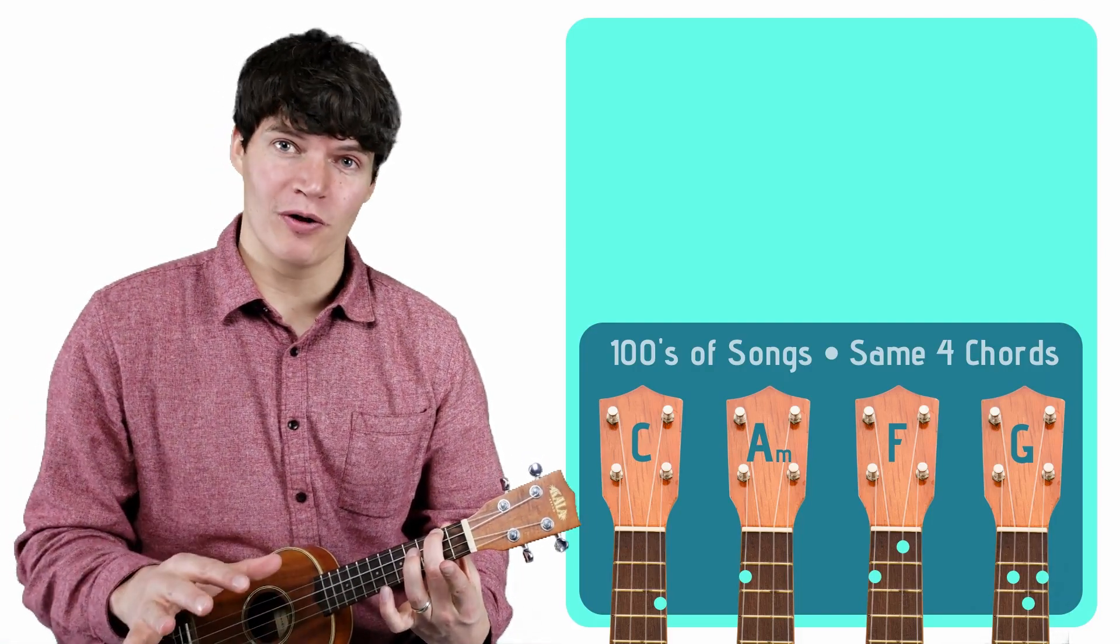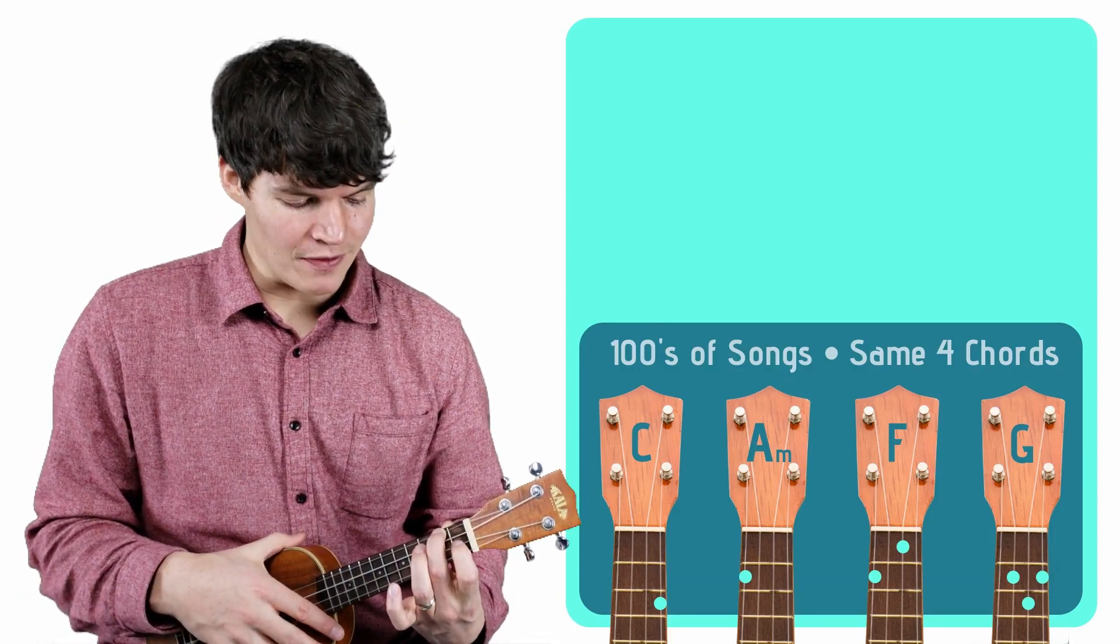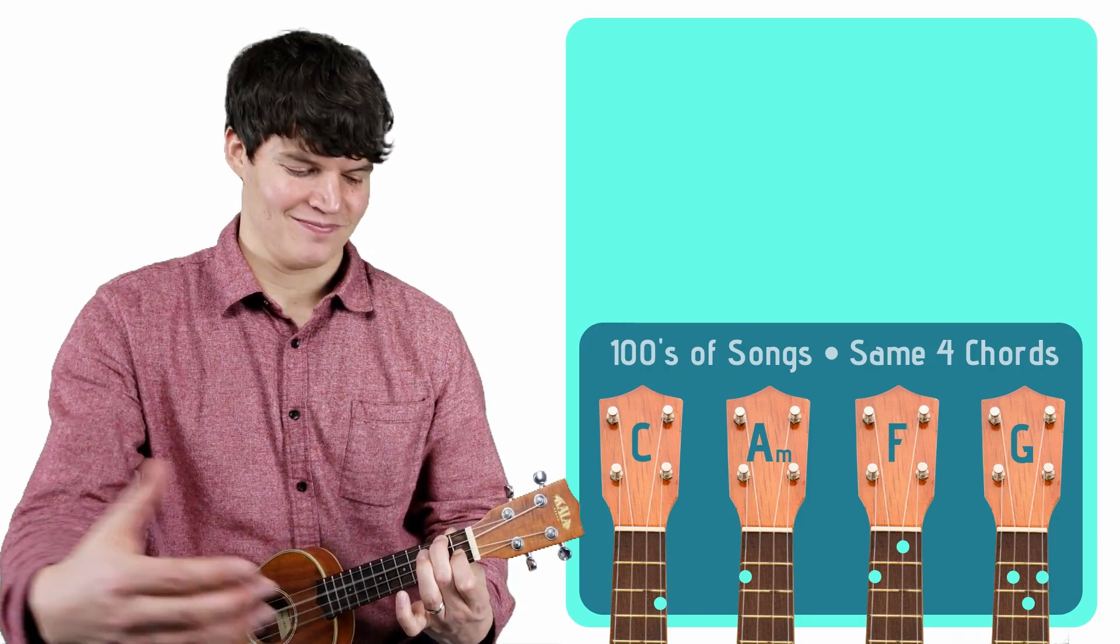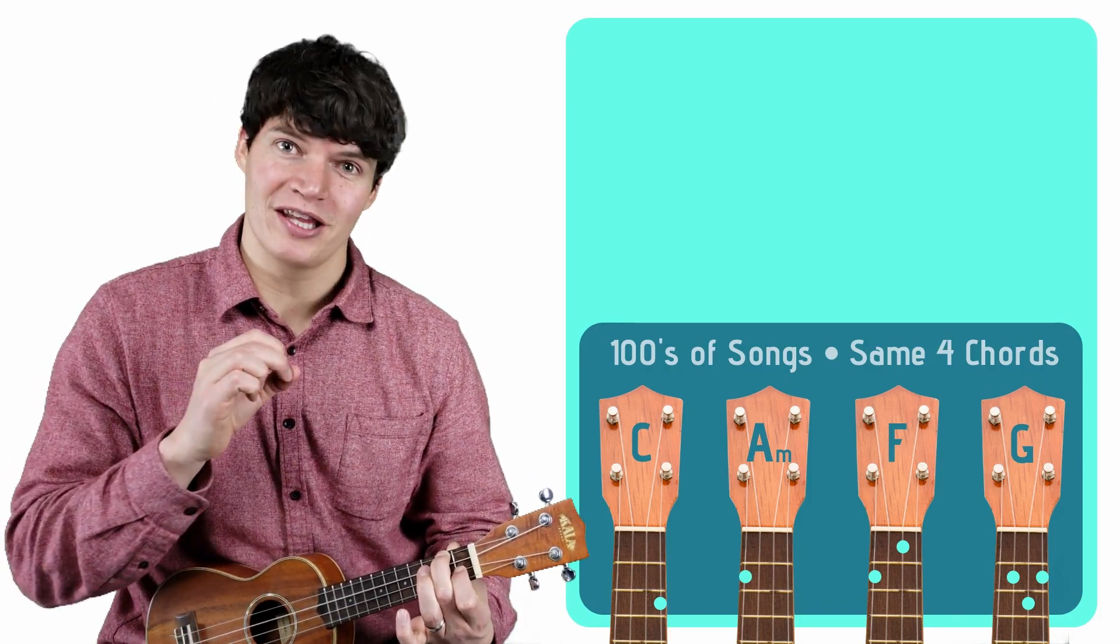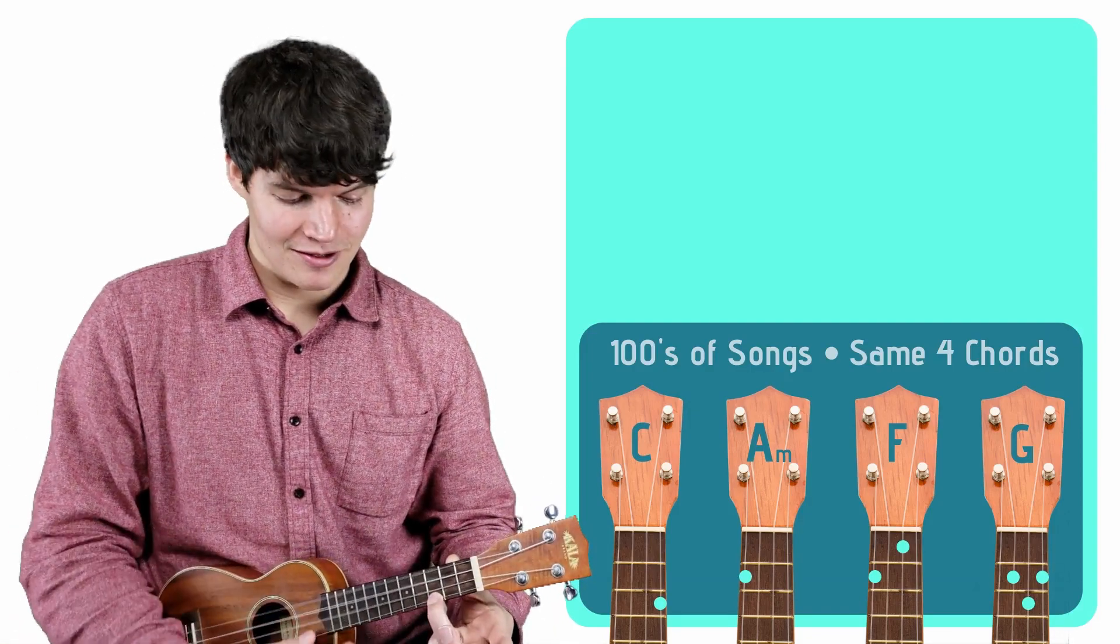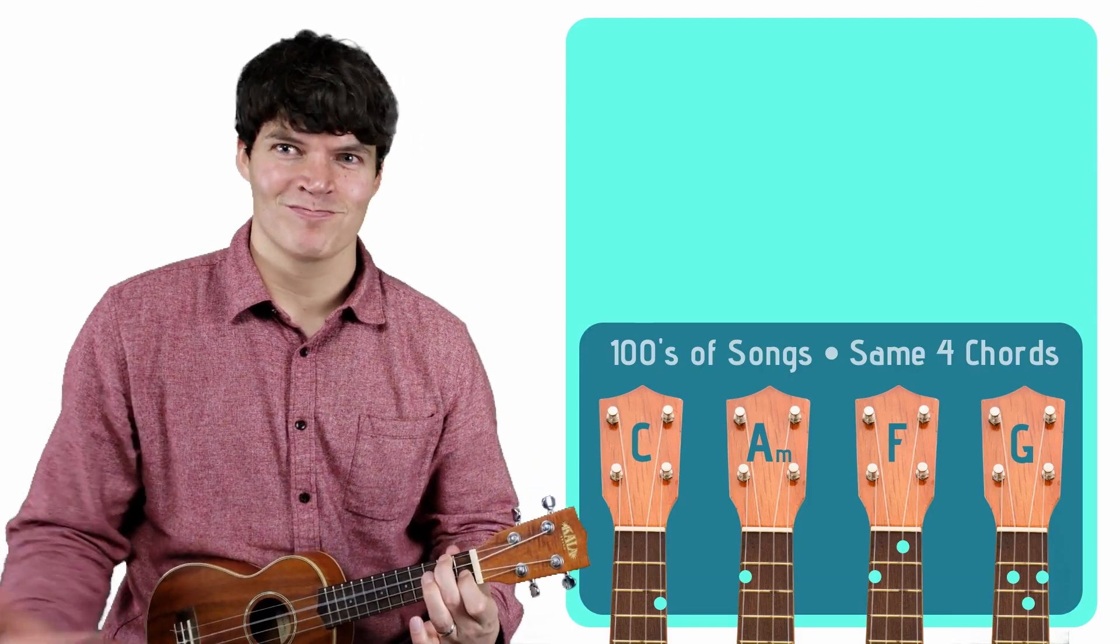And the third chord, it's not too much harder. You're just going to take your index finger and put it down on the first fret of the second to bottom string. There you go. You've just converted the A minor chord into an F chord. So now you've got the C chord, the A minor chord, and the F chord.